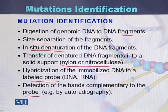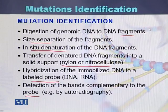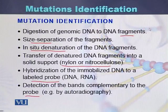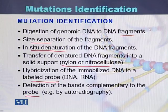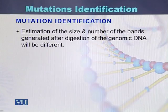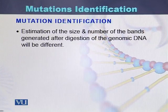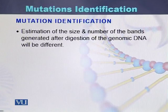This procedure identifies mutations because a change in the DNA sequence — particularly at the site where there is the recognition sequence of a particular restriction enzyme — means we can check whether there is any mutation or the sequence of the gene is normal. The size and number of bands generated after digestion of the genomic DNA will be different due to the presence of a mutation, so the band sizes of a normal individual and an affected individual will differ from each other.